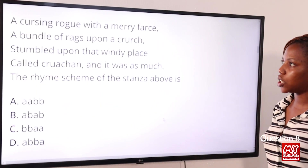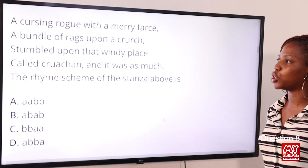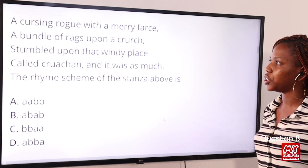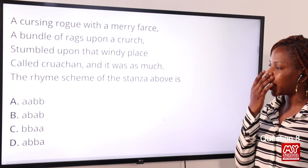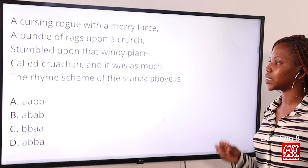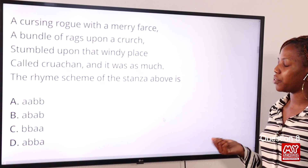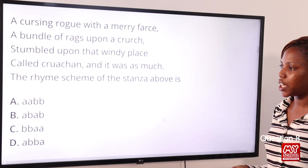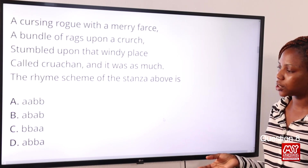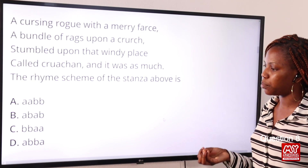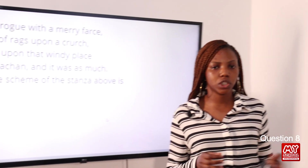Question eight: 'A crossing road with a merry fast, a bundle of rags upon a crutch, stumbled upon that windy place called Crutch End, and it was as much.' The rhyme scheme of the stanza above is Option A: AABB, Option B: ABAB, Option C: BBAA, Option D: ABBA.